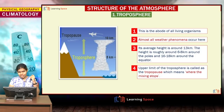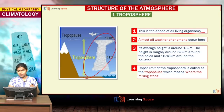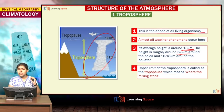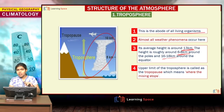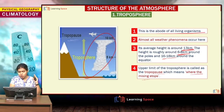The troposphere is the lowermost layer and the abode of all living organisms. Almost all weather phenomena occur in this layer. Its average height is around 13 kilometers; however, there are latitudinal differences — it is roughly 6 to 8 kilometers above the poles and 16 to 18 kilometers above the equator.